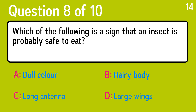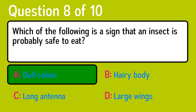Question 8, which of the following is a sign that an insect is probably safe to eat? The correct answer is A, dull color.